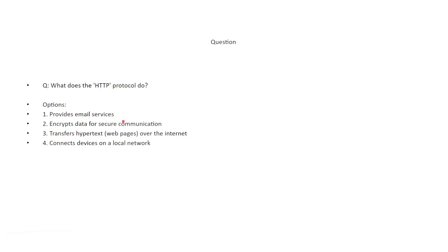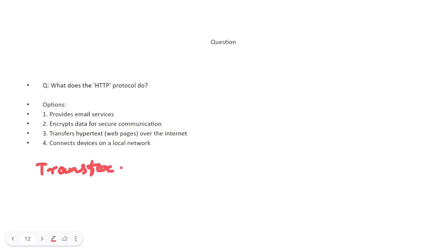What does the HTTP protocol do? The options are: provides email services, encrypts data for secure communication, transfers hypertext web pages over the internet, and connects devices to a local network. The correct answer is that it transfers hypertext. HTTP stands for Hypertext Transfer Protocol — it is the protocol used for transferring web pages on the internet.